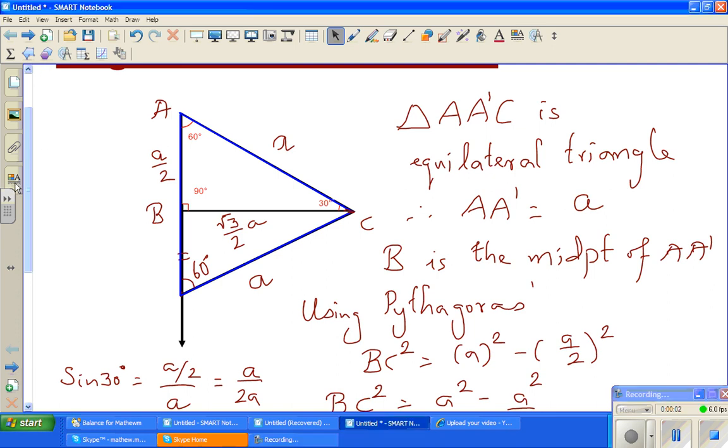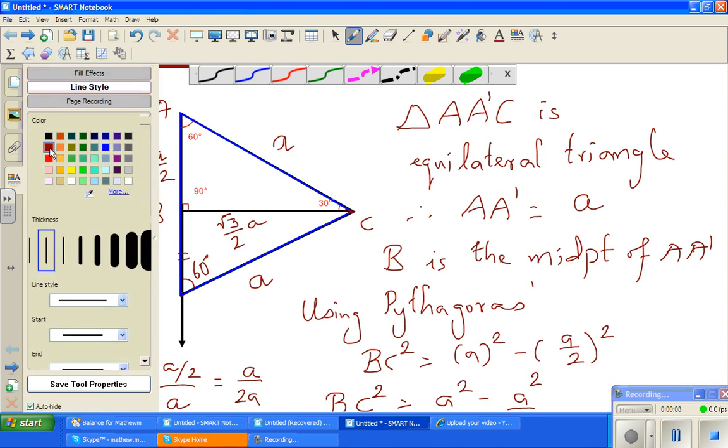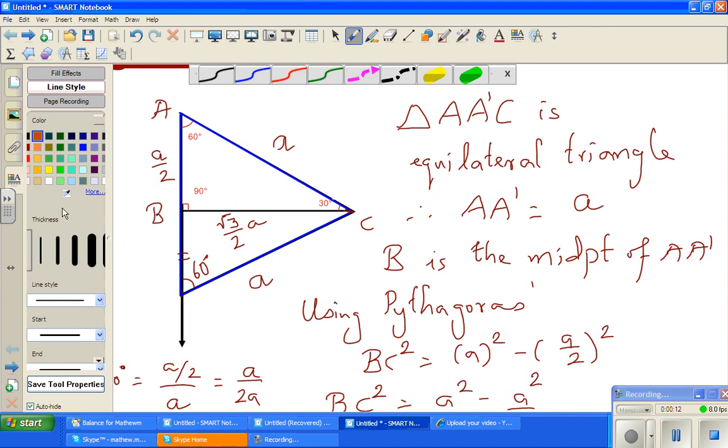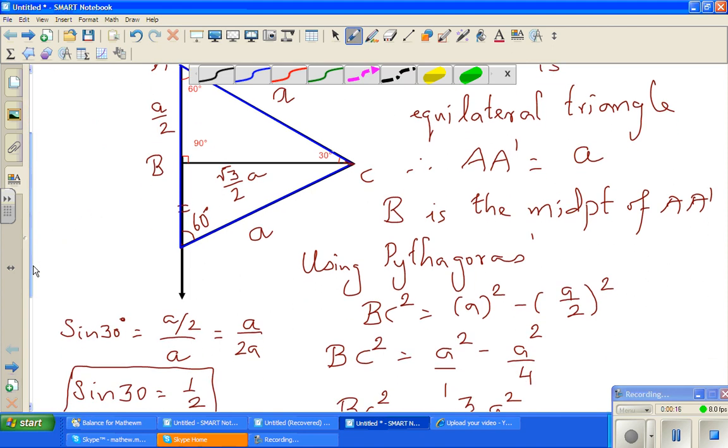In the last video we finished proving that sin 30 is one half and cos 60 is also one half. So let me go over it very soon.